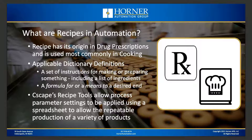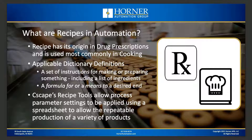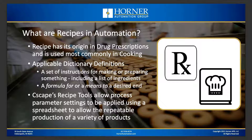So what are recipes in automation? The word recipe has its origin in drug production or drug prescriptions. Of course, we all know it from its common use in cooking. One dictionary definition says a recipe is a set of instructions for making or preparing something, including a list of ingredients. Another definition: a recipe is a formula for or a means to a desired end. Seascape's recipe tools are used to allow process parameter settings to be applied using a spreadsheet, enabling repeatable production of a variety of products — for example, managing a series of parts being manufactured on a machine with different parameters.